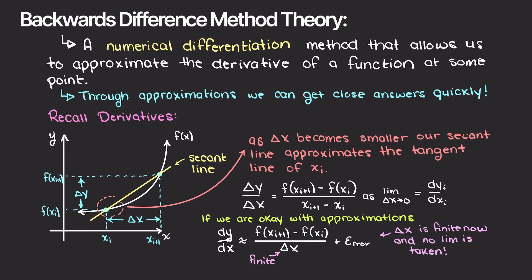Thereby, assuming a finite small change in x, we can make our lives much easier and solve much more complicated problems by just giving up a bit of accuracy. So, how does this work and how does it relate to the backwards difference method?